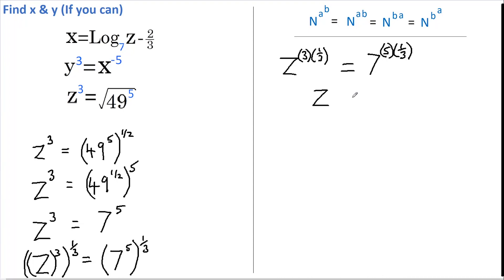And this equals 7 to the power of 5 over 3. And if we now substitute this into this equation, we get that X equals the log base 7 of 7 to the 5 over 3 less 2 thirds.